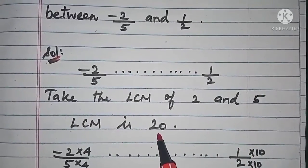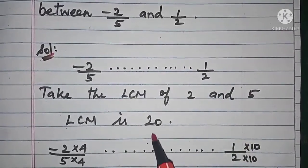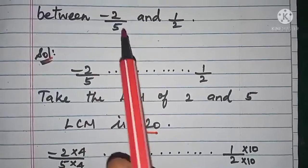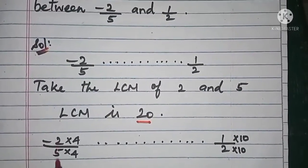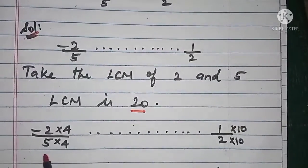There are many LCM numbers for 2 and 5. I am going to take only 20 because I need only 10 rational numbers, so 20 is enough. For -2/5, I have to change the 5 into 20, so I have to multiply by 4.